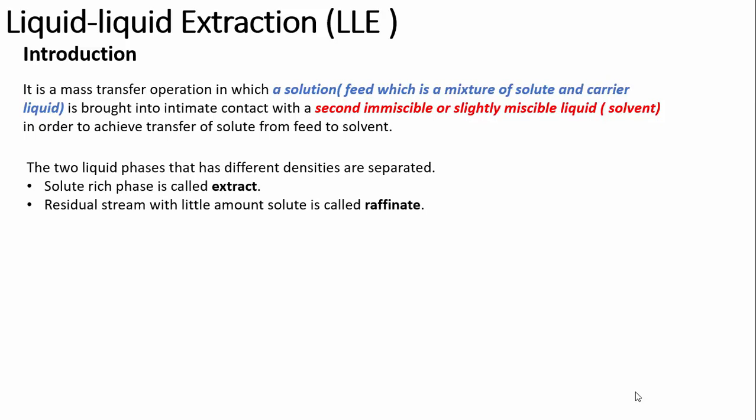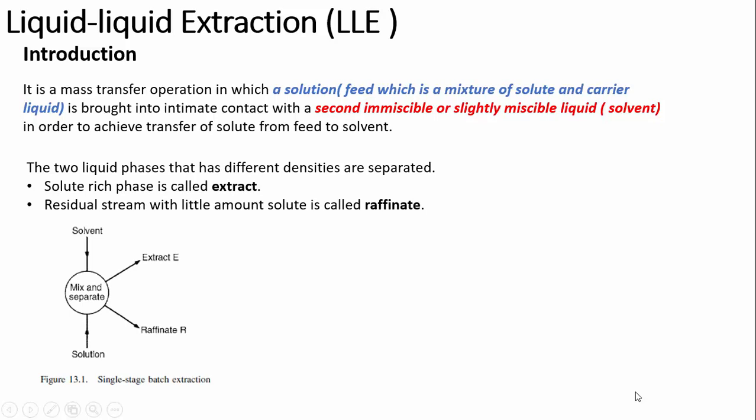When the solvent is mixed with the feed, two liquid phases form. These two phases have different densities and can therefore be separated based on that density difference. One liquid phase will be rich in the solute — called the extract — and the other, with little or no solute remaining, is called the raffinate.